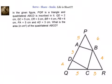Hello friends, welcome back. Let us look at this very interesting problem. We have been given a triangle PQR and a quadrilateral ABCD inscribed in it. We have to find out the area of ABCD, given that PA = 5, AD = 3, QD = 2, QC = 5, CR = 3, BR = 4, and PB = 6.